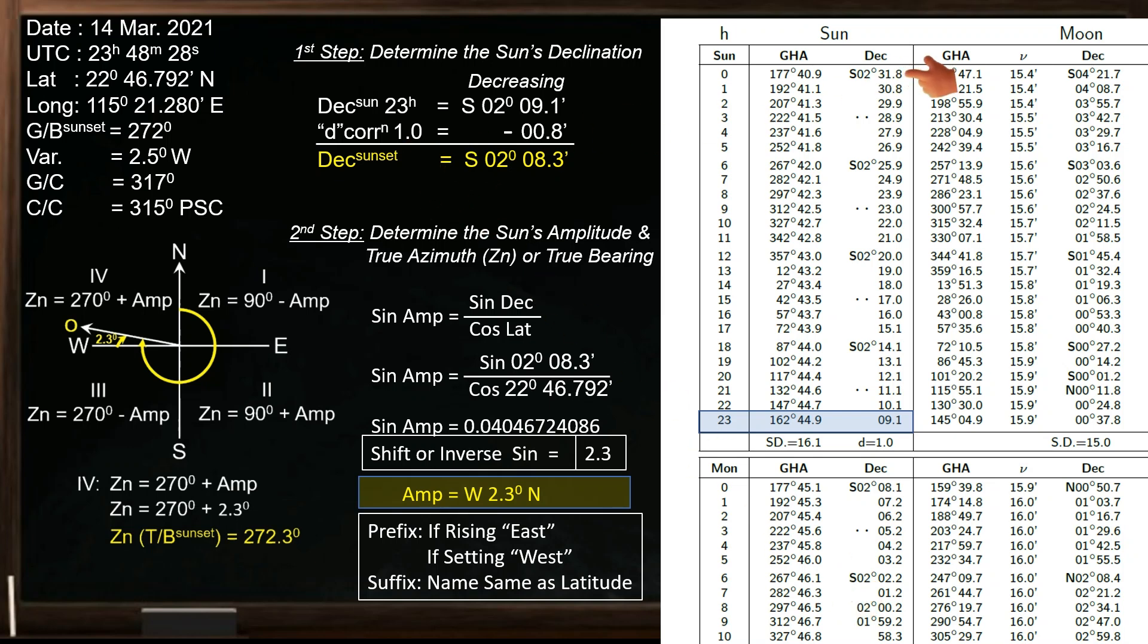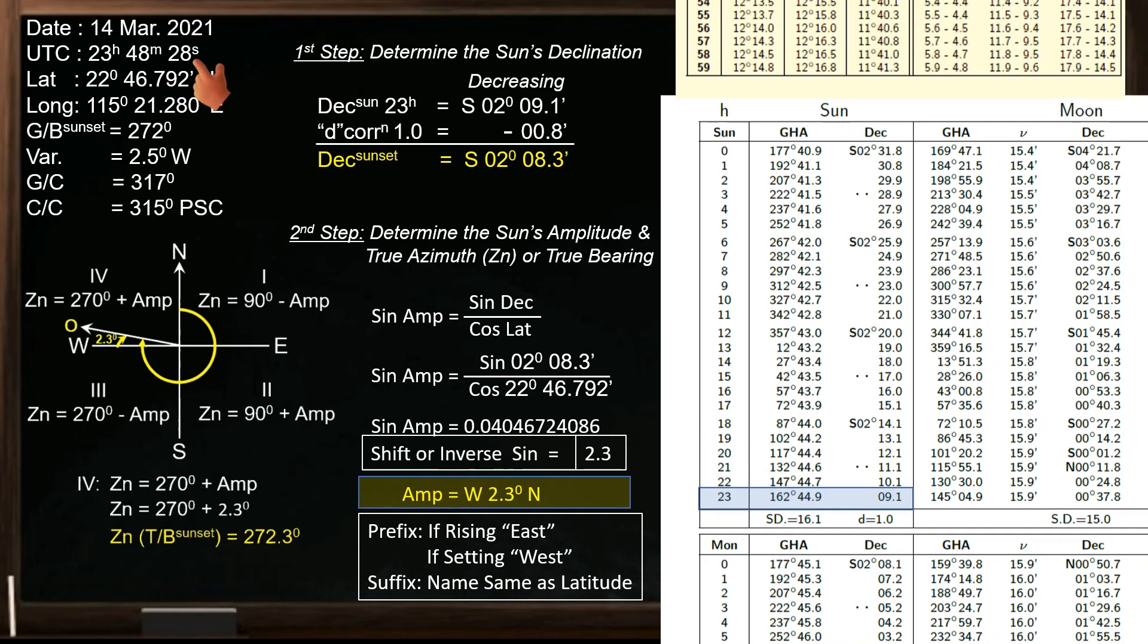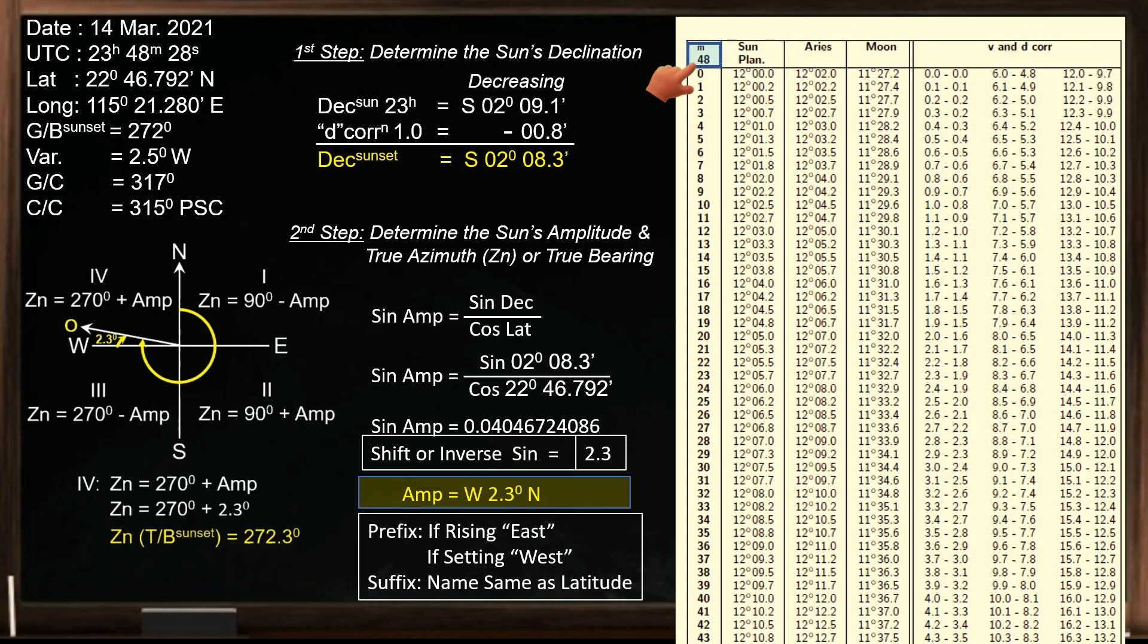Next, inspect the declination value from above going down and note if it is increasing or decreasing. In this case, it is decreasing; this is the reason why we subtract the correction. To determine this correction, find this 48 minutes in the increments table, or in the yellow page of the nautical almanac. In the V and D correction, find 1.0. It is here, the correction is 0.8 minute.